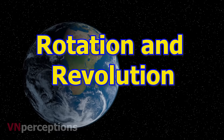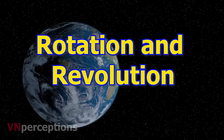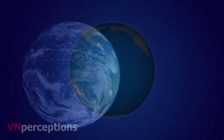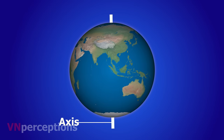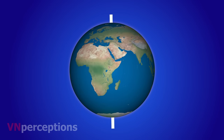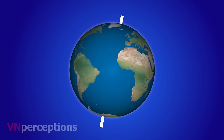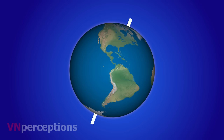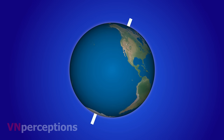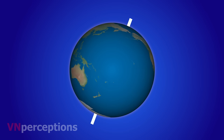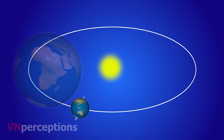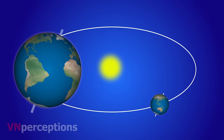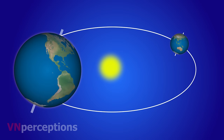Let us learn rotation and revolution of the earth and its effects. The spinning of the earth around its own imaginary axis is known as rotation of the earth. This axis is tilted at an angle of 23 and a half degrees from the vertical. With this tilted axis, the earth revolves around the sun, and that is known as revolution. These are the two important motions of the earth: rotation and revolution.